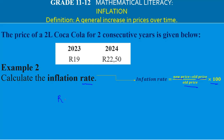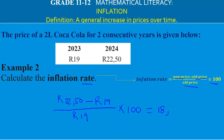To calculate the inflation rate, we take the new price (the 2024 price) minus the old price (the 2023 price of R19), divided by the old price (2023), then multiply by 100. Rounding to two decimal places, the inflation rate is 18.42%.